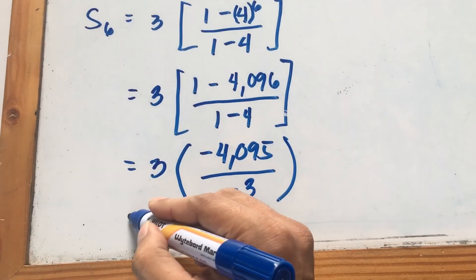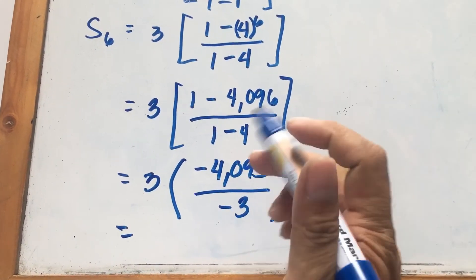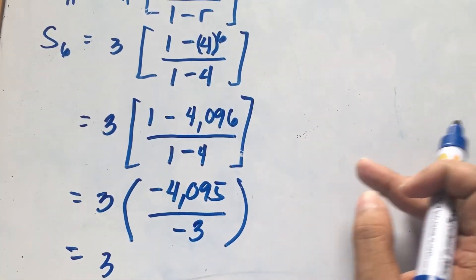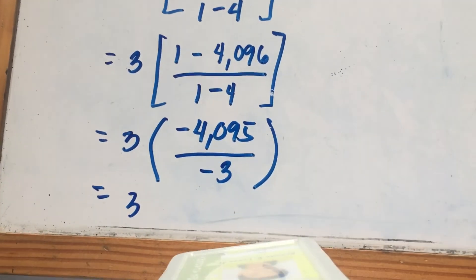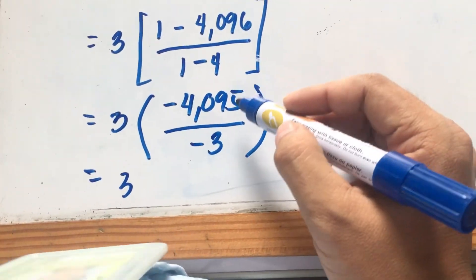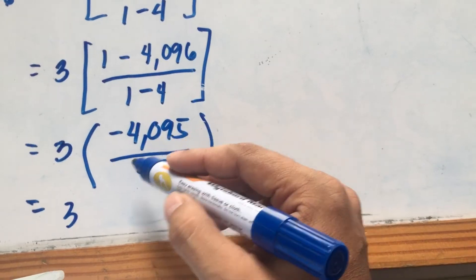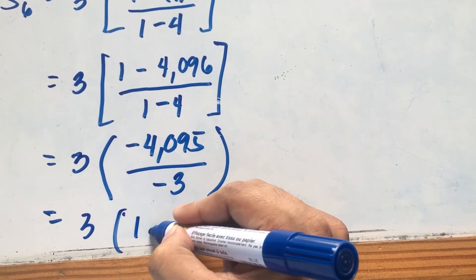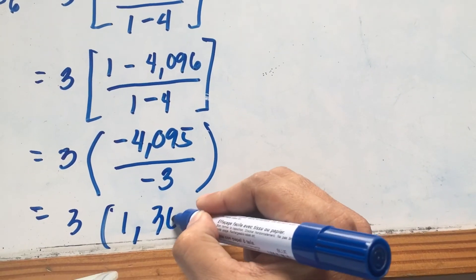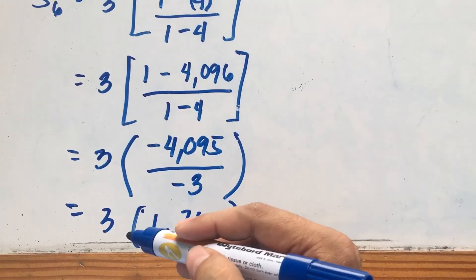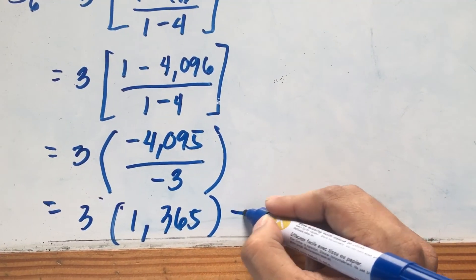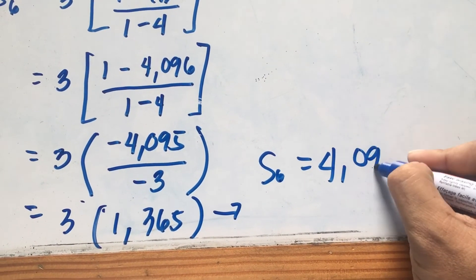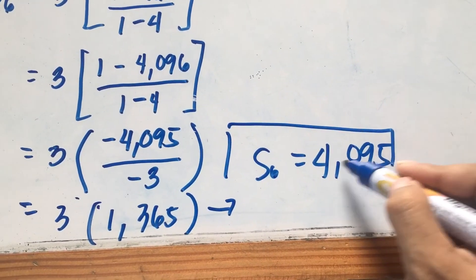Now simplify inside the parenthesis: negative 4,095 divided by negative 3 equals positive 1,365. So we have 3 times 1,365. Therefore, S sub 6 equals 4,095. That is the final answer.